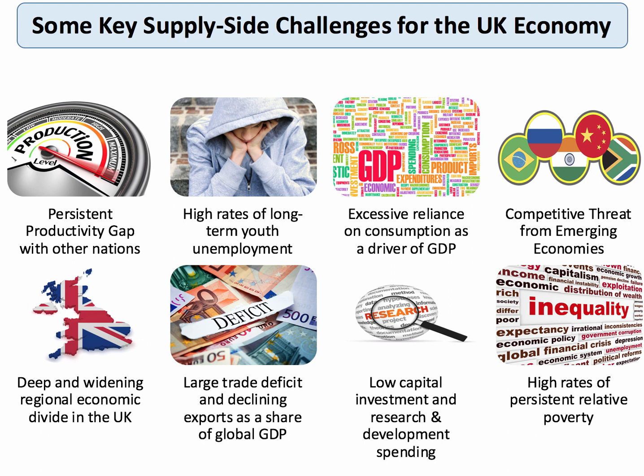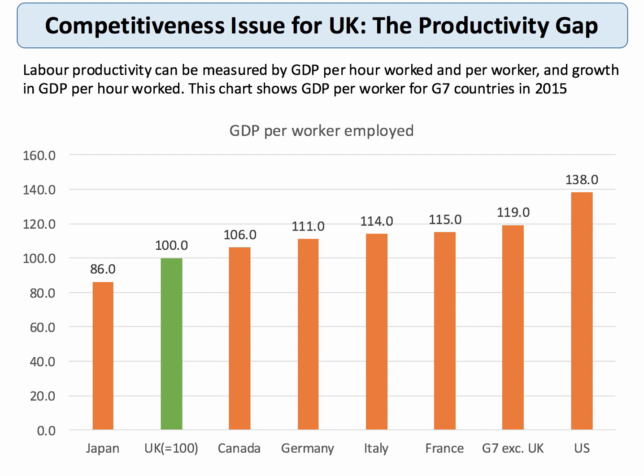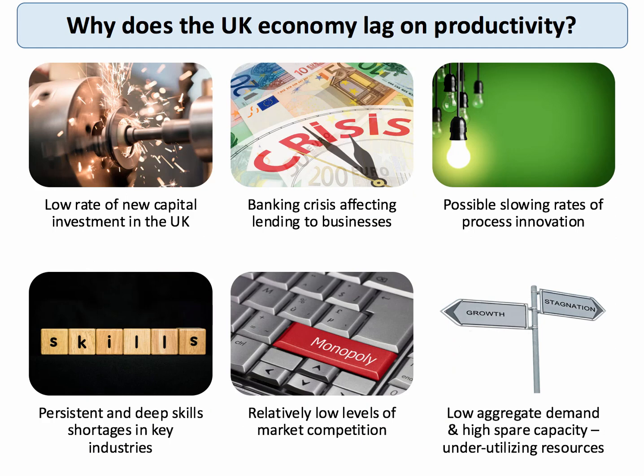One of the big issues is the productivity gap — our productivity is lower than our major competitors. Measured by GDP per worker employed with the UK as an index of 100, we're ahead of Japan but well behind Canada; Germany is 10–11% ahead of us, France is ahead, and the United States is nearly 40% ahead in terms of productivity. Many are asking why we're lagging — this is clearly a supply-side problem.